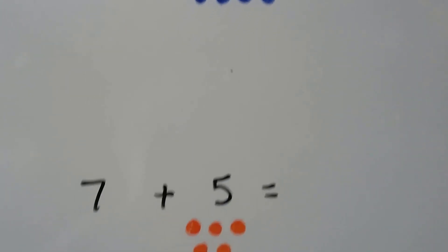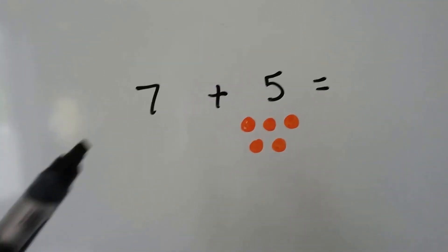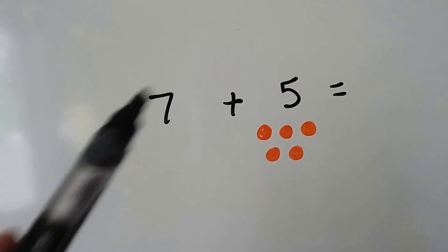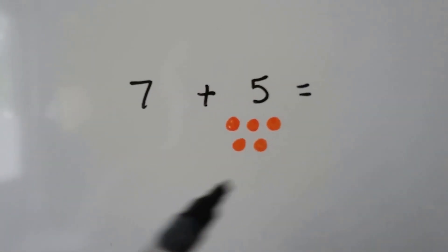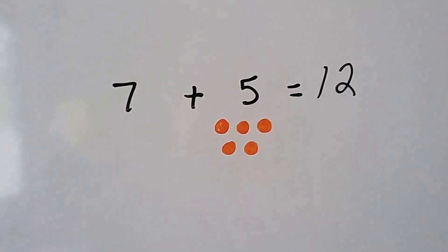Let's try this one. 7 plus 5. We're going to start counting from 7 and then go up: 7, 8, 9, 10, 11, 12. 7 plus 5 is 12.